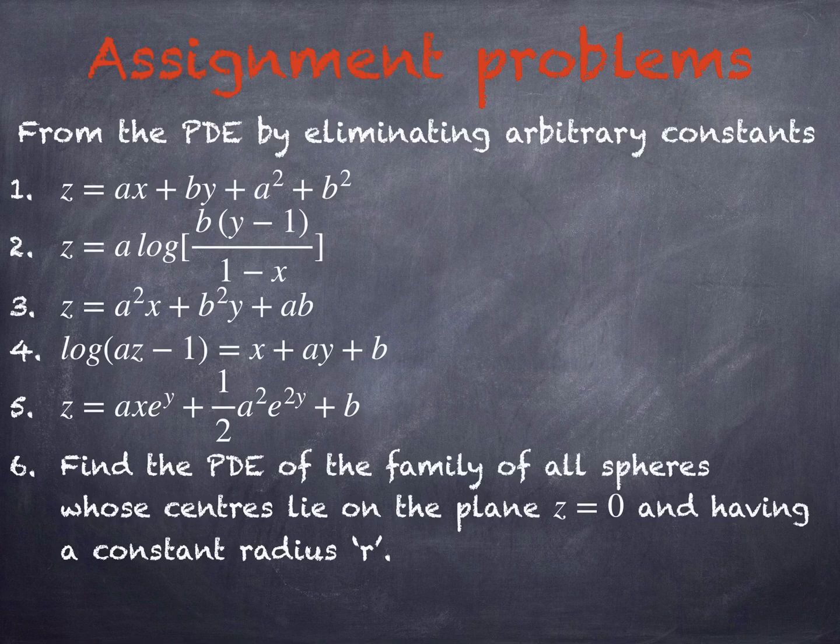For the sixth problem: find the PDE for the family of all spheres whose centers lie on the plane z equals 0 and having constant radius. The equation is not given intentionally — you need to form it first. Since the center is on the plane z=0, x and y will have some value and the sphere is not at the origin. Write the equation of the sphere first, then differentiate partially with respect to x and y, and eliminate the constants. Note that r is the radius and does not need to be eliminated — if r remains in the solution, that is acceptable.